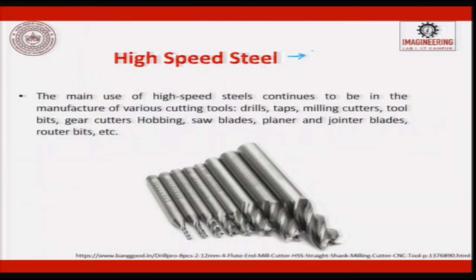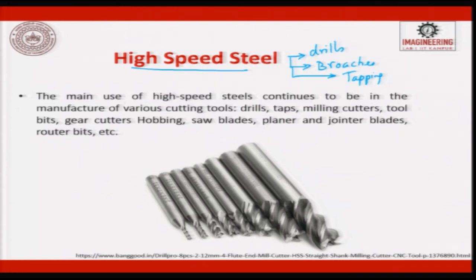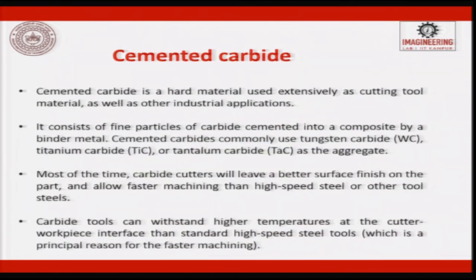High speed steels are used for drills, broaches, and tapping where the thread geometry is complex. Wherever there is an impact load and complex geometry, we prefer to use HSS. The main use of HSS continues to be in the manufacture of various cutting tools: drills, taps, mill cutters, tool bits, gear cutters, hobbing, saw planer and joint blades, and router bits - all operations where there is impact load and complex geometry which cannot be done by die or compaction process.